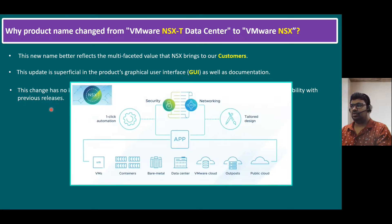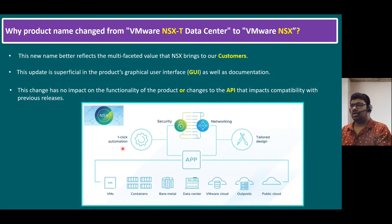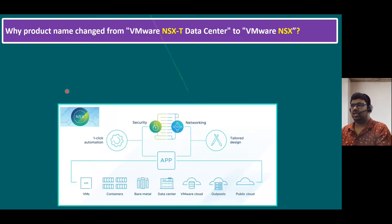Changes to the API (application program interfaces) do impact compatibility with previous releases, but backward compatibility is still available. For the new VMware NSX 4.0 series, APIs are changed. Architecture-wise, there will be no changes — networking, security, tailored design, and one-click automation can still run on any environment with VMware NSX 4.0.